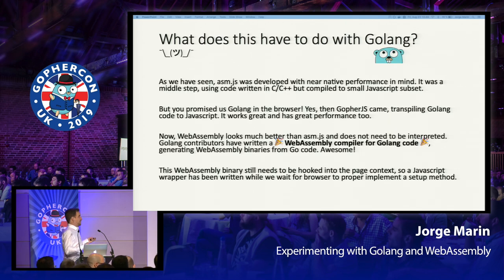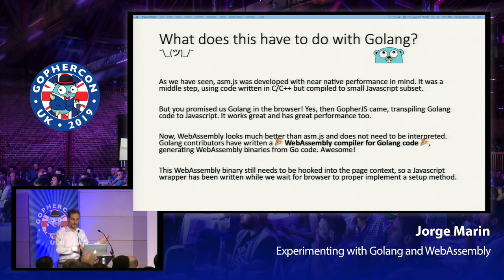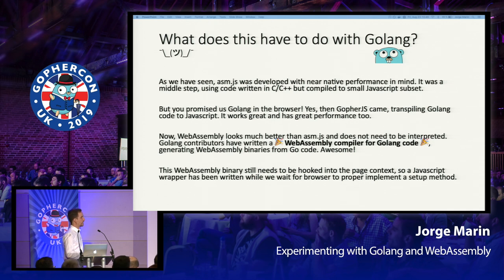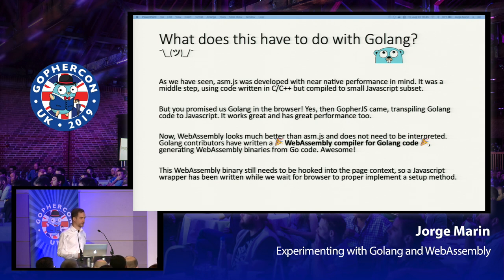But what does this have to do with GoLang? You can run GoLang code in the browser using WebAssembly. As many of you might know, there's a tool called Gopher.js which transpiles GoLang code to JavaScript — you can run that in the browser, but it's still JavaScript with all the downsides of just-in-time compilation. Now, with WebAssembly, everything looks much better than ASM.js. The GoLang contributors have written a WebAssembly compiler for GoLang code inside the GoLang source code — you just need to run go build with Wasm as a target, and it will create a Wasm binary for you.